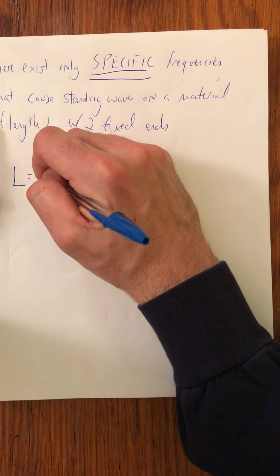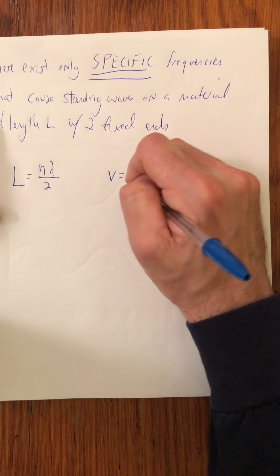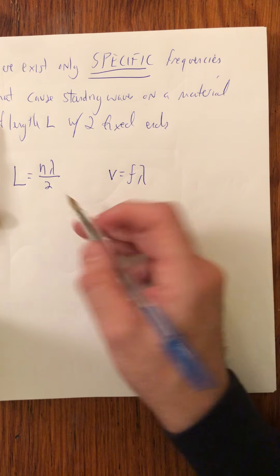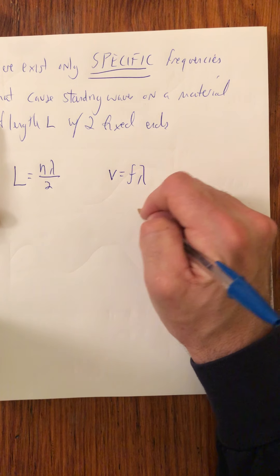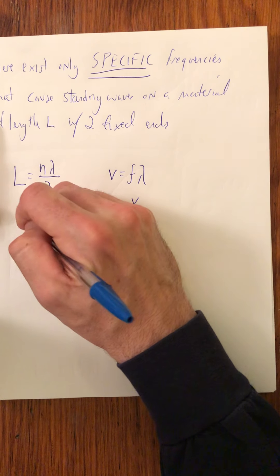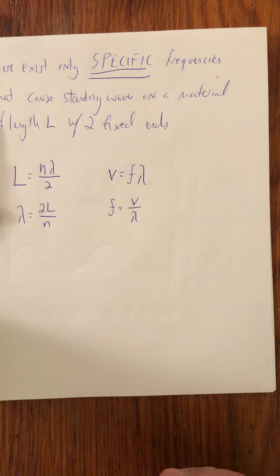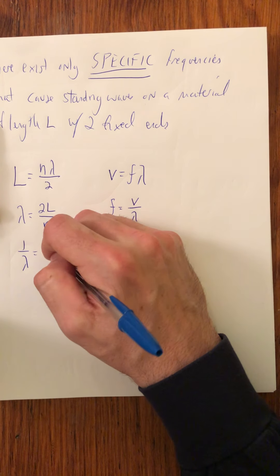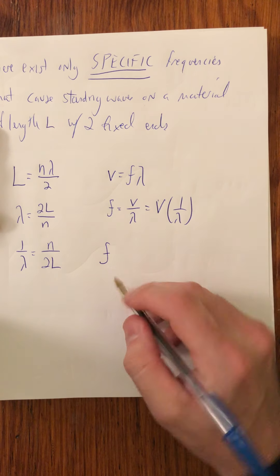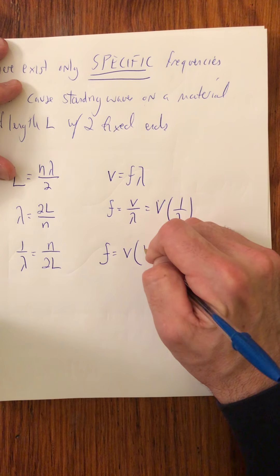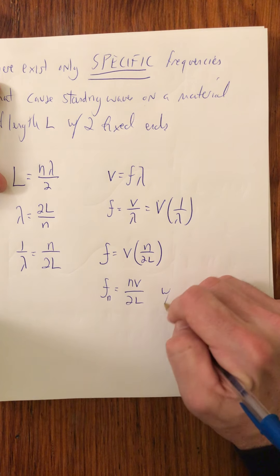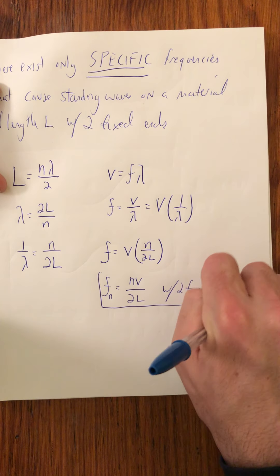We know that L is equal to n lambda over two. We also know that v is equal to f lambda. So if I rearrange these terms right now, so that this is equal to lambda. Actually, let me rearrange this so this is equal to frequency, because that's what I want. Frequency is v over lambda. And then lambda here is equal to 2L over n. And therefore, one over lambda is equal to n over 2L. And I wrote that because this is equal to v times one over lambda. Apparently, the frequencies that would cause standing waves on this medium are v times n over 2L. So f sub n is equal to nv over 2L with two fixed ends. And that's our equation.